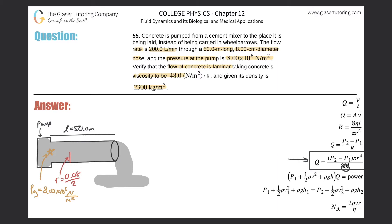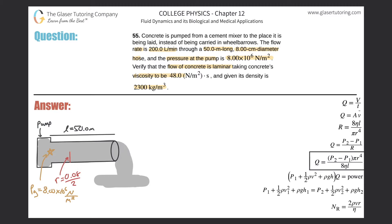More viscosity — meaning a thicker fluid — means less flow. And a smaller pressure differential means less flow too: if the pressure differential is zero, the flow rate Q is zero as well.